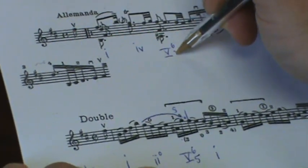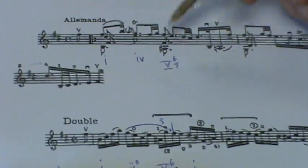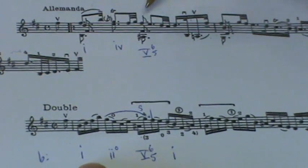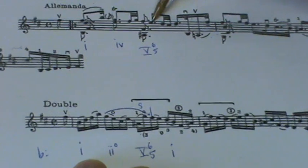Then this is clearly 5, 6, 5. There's no question about that because you've got the root, F sharp, F sharp, A, C sharp, and then your E.